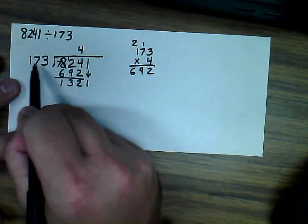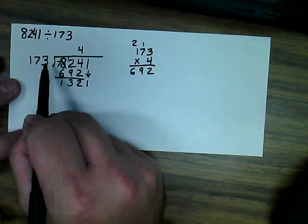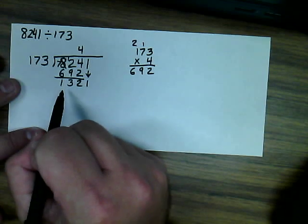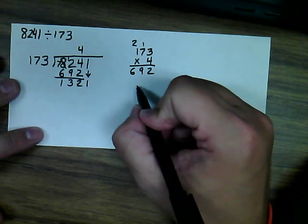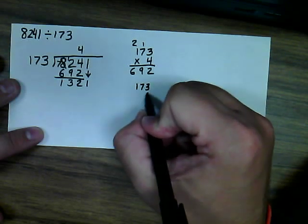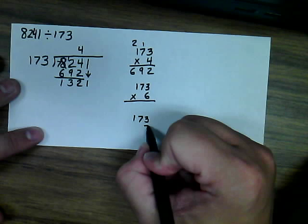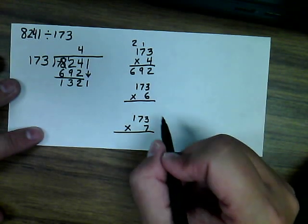And now it's time to estimate how many times 173 goes into 1321. Again, 200 is a good number to work with, so I'm thinking since 200 times 6 would be 1,200, and 200 times 7 would be 1,400. I think both of those are good numbers to start with, so we're going to do 173 times 6 and 173 times 7. Now, neither of those are guaranteed to work, but I think they're going to be pretty close.